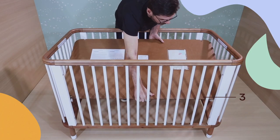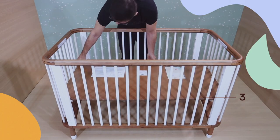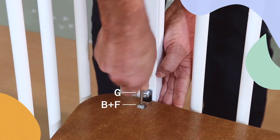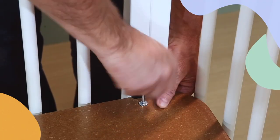Next, we'll attach the mattress support, piece 3. Secure the mattress support onto the mattress support bolts using bolt B, washer F and the Allen wrench. Repeat this for all 4 sides.